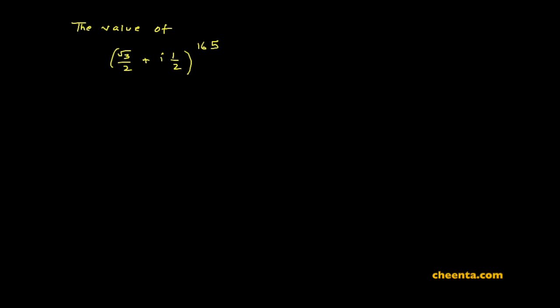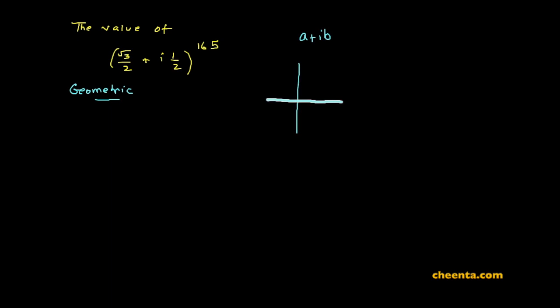This is a very curious problem from complex numbers. We are asked to compute the 165th power of a certain complex number, and that might seem a little challenging at first, but let's do this in a more geometric way — because if you think about a complex number a plus ib, it's nothing but a point (a, b) on the complex plane, which is just the normal coordinate plane with a special rule of multiplication defined on it.